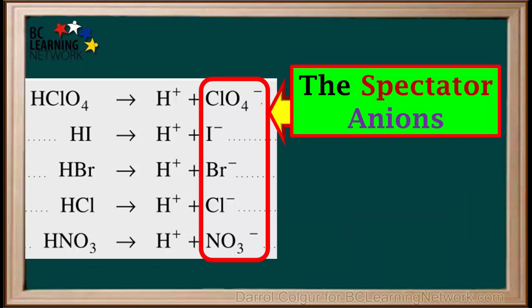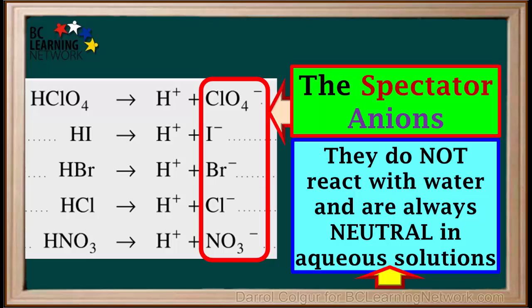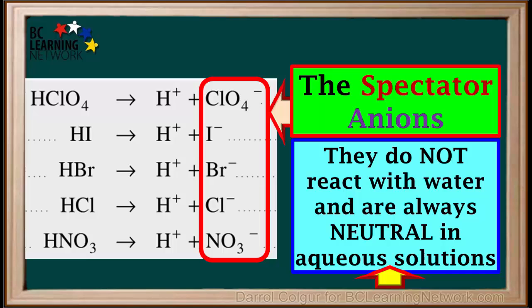The spectator anions are the top 5 ions on the right side of the acid table. They are perchlorate, iodide, bromide, chloride, and nitrate. These ions do not react with water and are always neutral in aqueous solution. We can list all the spectator cations and spectator anions in a single box and use this whenever we have to determine whether a salt is acidic, basic, or neutral. It is a good idea to memorize these in order to save time later.